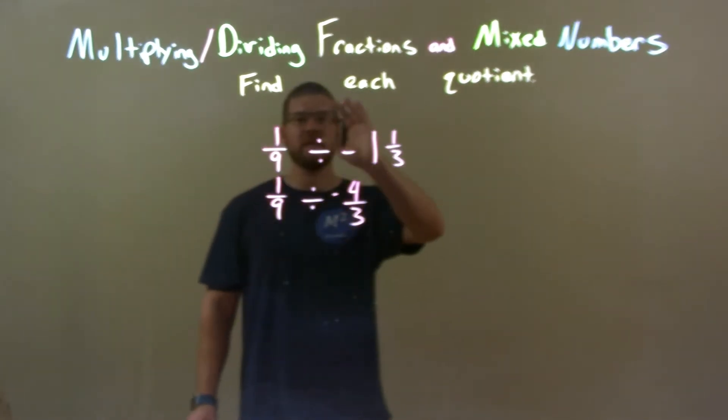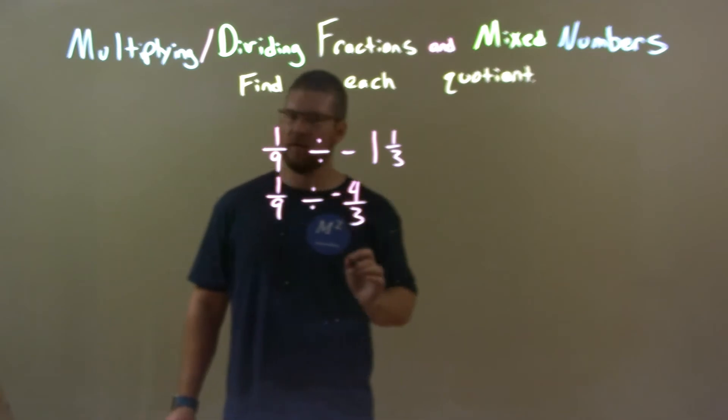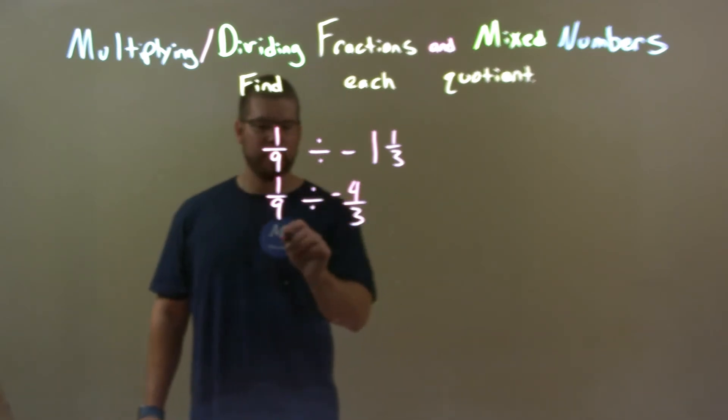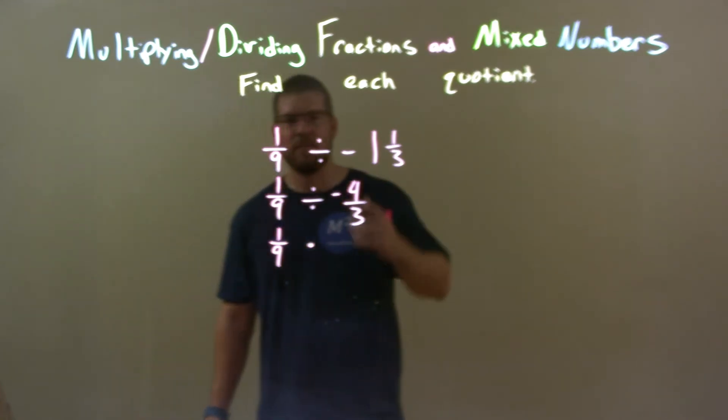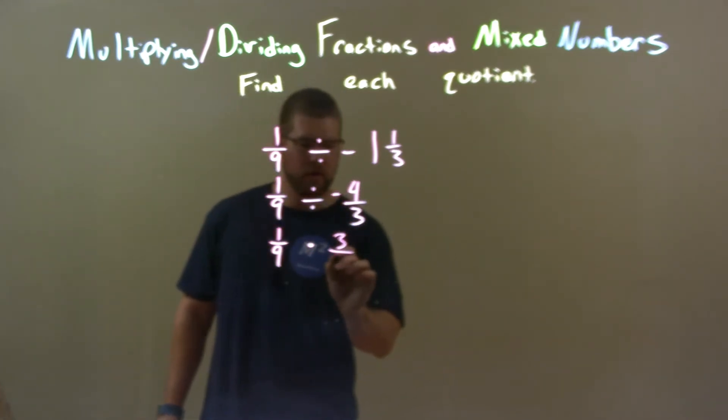Now, I hate dividing fractions. I prefer multiplying fractions. I find it so much easier. So, let's convert this to multiplication. 1 ninth. Instead of division, multiply and we flip the second number. 3 over negative 4. Negative really doesn't matter where it is here.